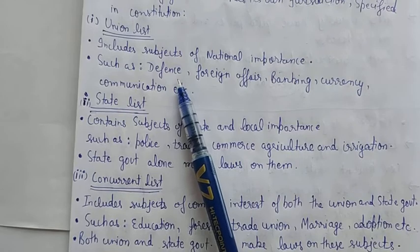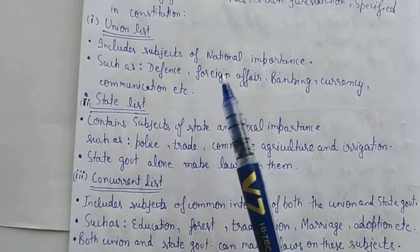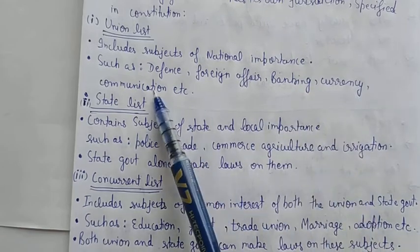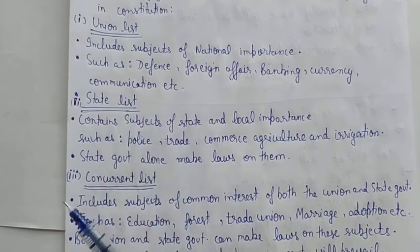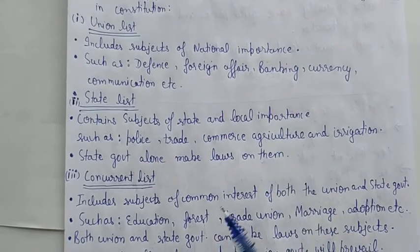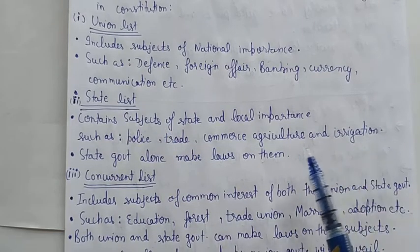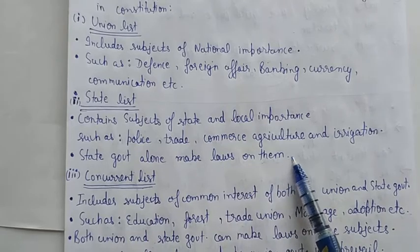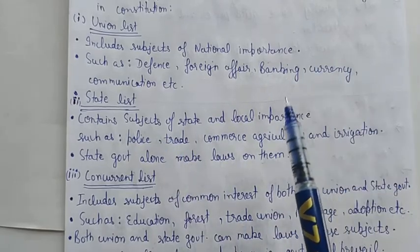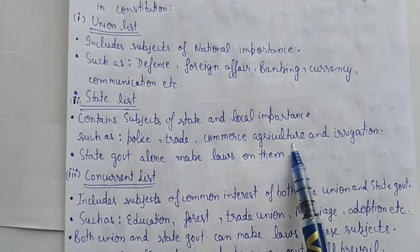Union List mein subjects hain jaise defense, foreign affairs, banking, currency, communication, etc. Defense toh pure desh ka ek hoga, toh usko central government hi control karegi. Foreign affairs bhi doosre deshon ke saath hamare relations — woh bhi central government ke paas hai. State List mein aata hai: police, trade, commerce, agriculture, irrigation — harik state ki alag-alag police, harik ka vyapar alag hota hai.